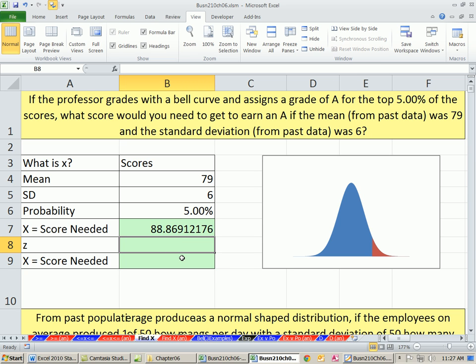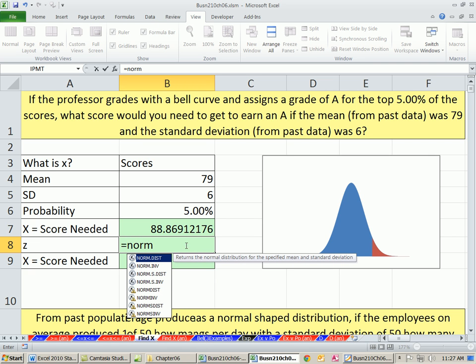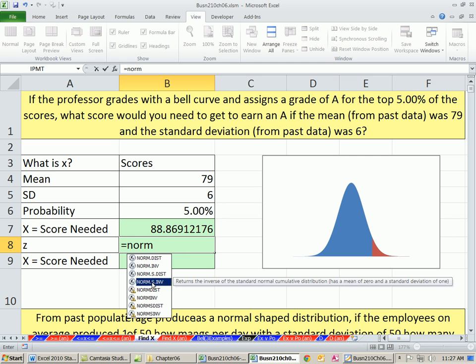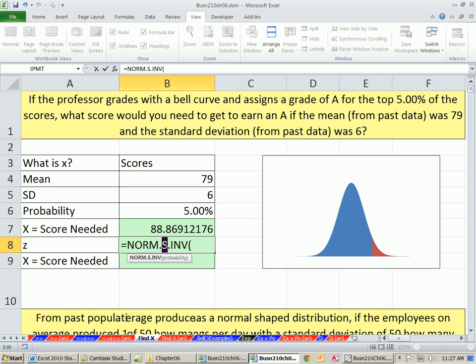If we want to determine Z from this 5%, we can use the NORM.S.INV function. The inverse functions always take a probability. The S stands for standard normal curve, and that's all about Z.